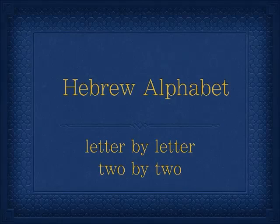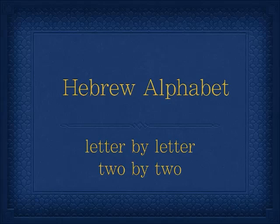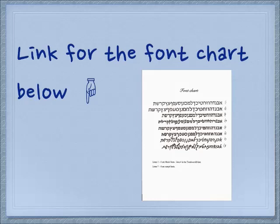Shalom. Today we're going to start a new series on the Hebrew alphabet. Many of you have been looking at these letters for a long time, some of you not at all. We're going to go letter by letter, two letters at a time. Each set of two letters will spell a word, so you'll learn a word and then look into the extra meanings, a little gematria, maybe the counterfeits of that word. It will be helpful to have the font chart — use the link in the description box to pull it down, and I would suggest you print it off.